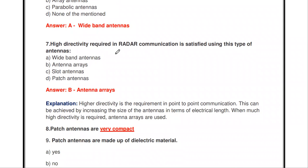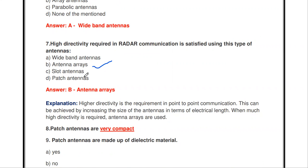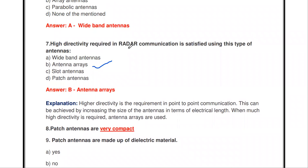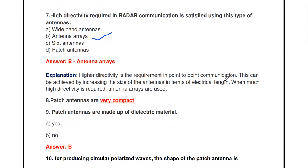The next question: the high directivity required in radar communication is satisfied using which type of antenna? The options are wideband antenna, antenna array, slot antenna, and patch antenna. The answer is antenna array. By connecting similar antennas in an array format, higher directivity is achieved — required for point-to-point communication — by increasing the electrical length of the antenna.